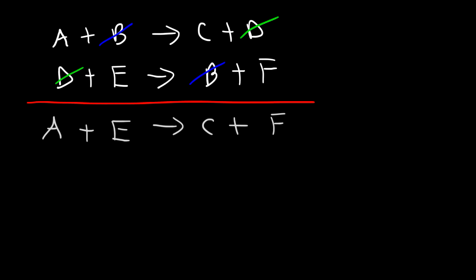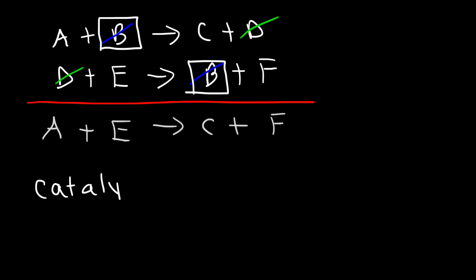Notice that B is consumed first and then it's produced later, so B is the catalyst. It shows up on the left side first and then it shows up on the right side second. The catalyst is consumed first and then it's produced later on in the reaction, and that's how it is never used up.